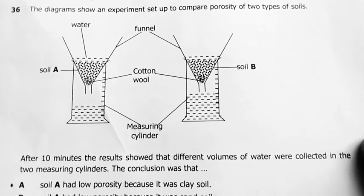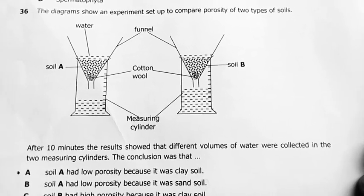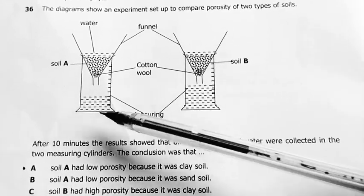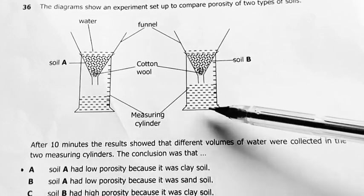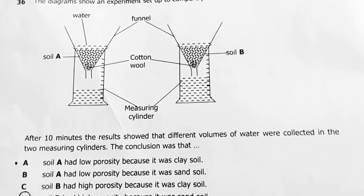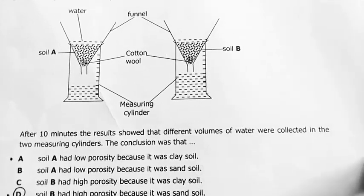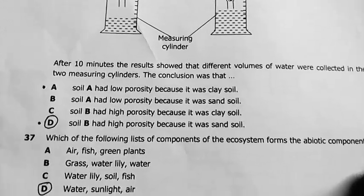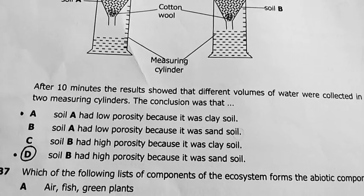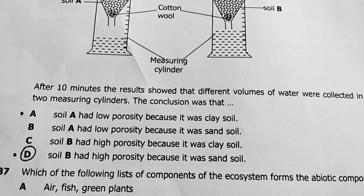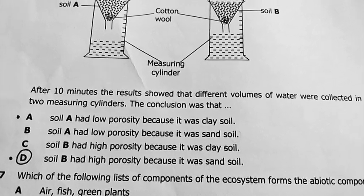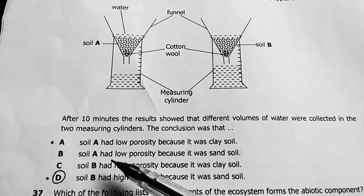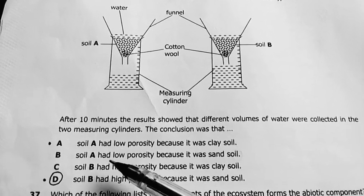Question 36: the diagram shows an experiment set up to compare porosity of two types of soil. You've got water, soil A, soil B, cotton wool, funnel, and measuring cylinders. One cylinder collected more water than the other — water passed more through one soil type. After 10 minutes, results showed different volumes collected. I was a little uncertain, but my final answer came out to be D — soil B has high porosity because it was sandy soil; soil A had low porosity because it was clay soil.